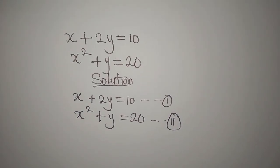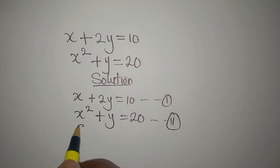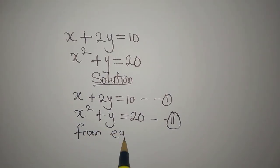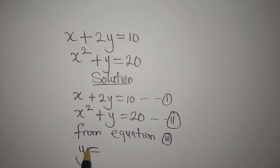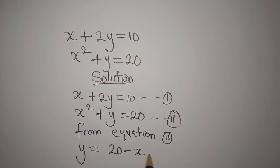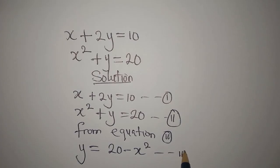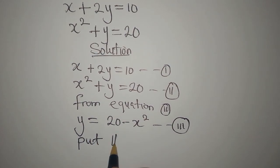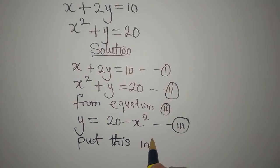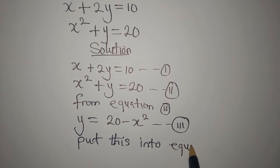Now, what I want to do is to make y the subject of the formula from equation 2. So from equation 2, y is equal to 20 minus x squared. Let's call this equation 3. Now, put this into equation 1 rather.